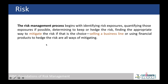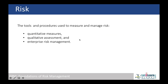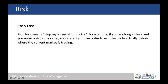The risk management process begins with identifying risk exposures — what kind of risk our company is going to face. Based on that, we take action to mitigate and reduce the risk. The tools used to manage risk include quantitative measures (expressed in numbers), qualitative measures (expressed in terms like reputation), and Enterprise Risk Management (ERM), which is the action taken by management.